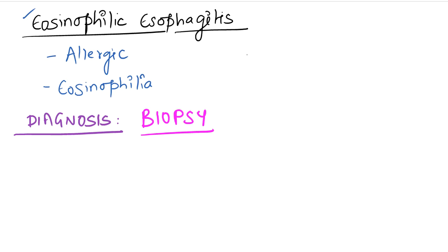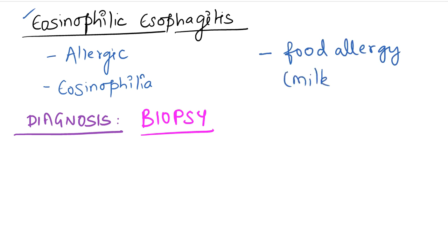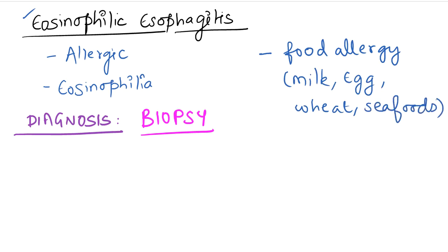Patients with eosinophilic esophagitis, because it is primarily related to the gastrointestinal tract, can also have significant food allergy associated. The common food allergens implicated are milk, egg, wheat, and seafoods — sometimes nuts as well — but these are the most commonly implicated allergens in patients with eosinophilic esophagitis.